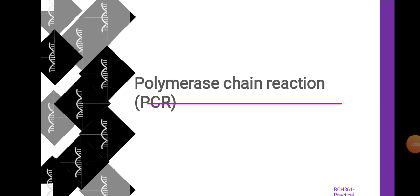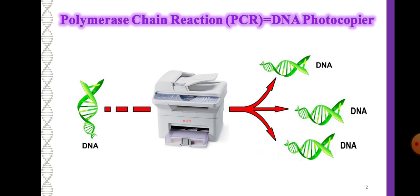Good morning. I am going to talk about a seminar topic on PCR, Polymerase Chain Reaction. We already studied this topic in UG; now we are going to see about PCR in brief. PCR was invented by Kary Mullis and his colleagues in the year 1983. They got the Nobel Prize for this invention in the year 1993. PCR is a copying machine for DNA molecules. Polymerase Chain Reaction is a method widely used to rapidly make millions to billions of copies of a specific DNA sample.